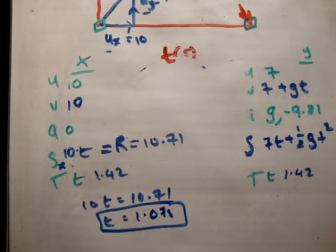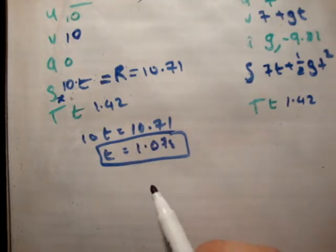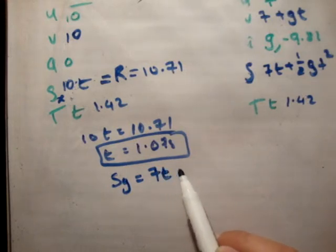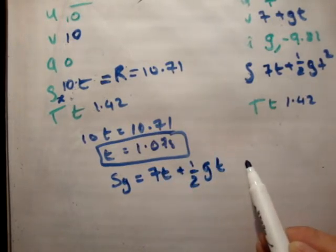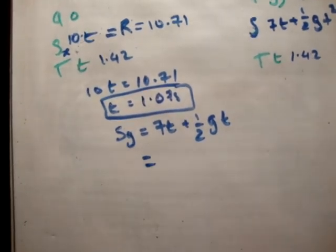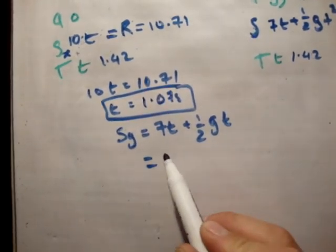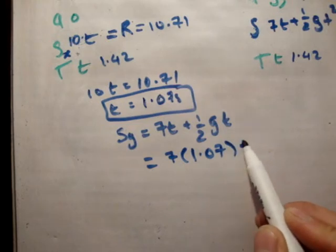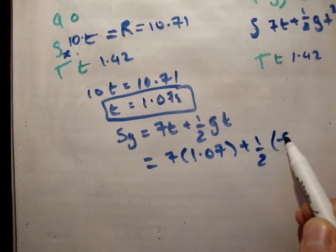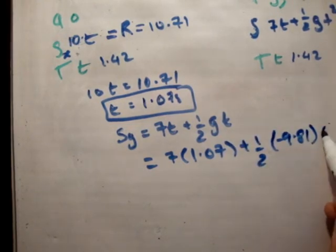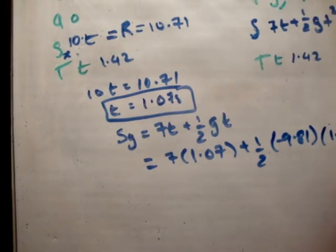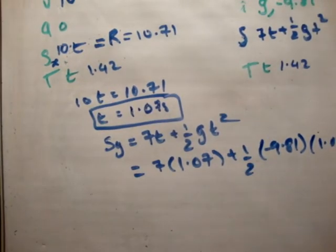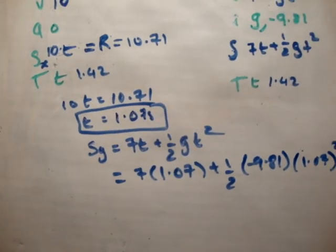So we need to find the distance at 1.07 seconds. S sub y is equal to 7t plus 1 half gt squared, equals 7 times 1.07 plus 1 half minus 9.81 times 1.07 squared. I'm just going to do that now on my calculator.